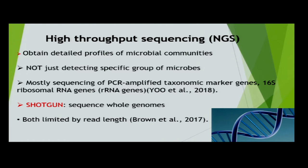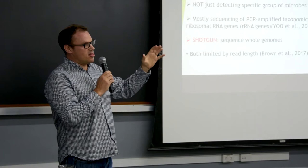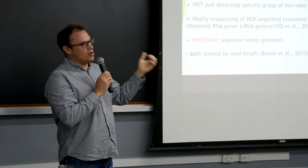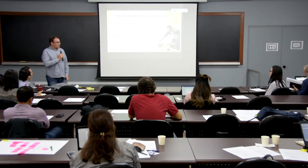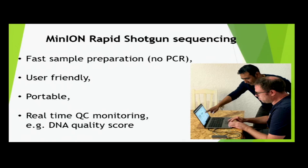Traditional methods are limited by read length. It would be good to have a technique where you can analyze longer fragments of DNA. Think of it like a fingerprint - you break it up into small fragments and a program puts it back together. It's easier and more accurate with bigger fragments. Traditional DNA sequencing relies on a large instrument with high capital cost, and you send your DNA away and get your identity back a few days or weeks later.